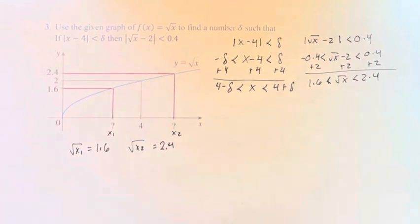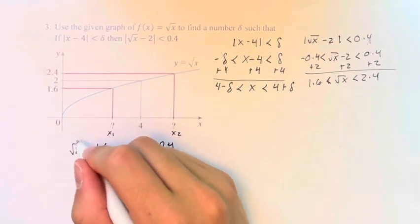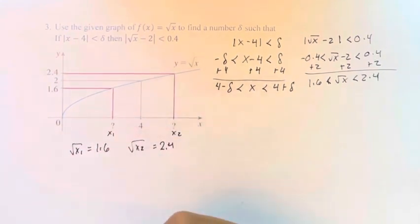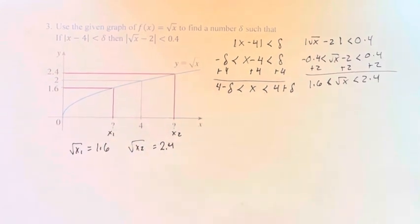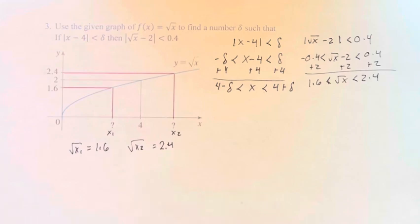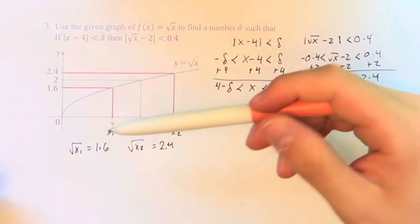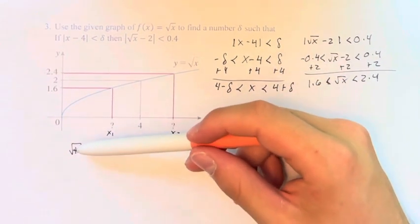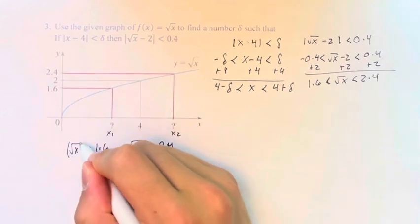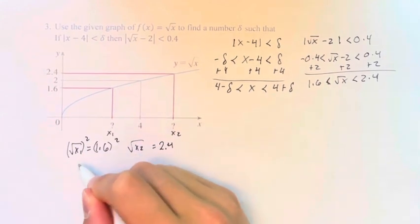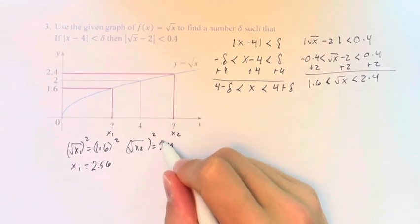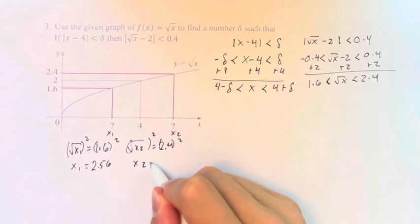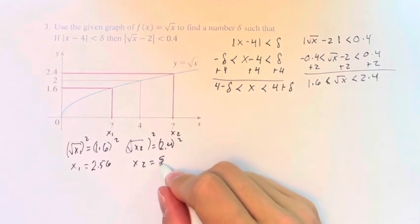So therefore, we can say that the square root of this value is 1.6. So if we take, we want to solve for this x value, we can just square both sides of the function to get that x1 is equal to 2.56. And same thing here, that x2 is equal to 5.76.